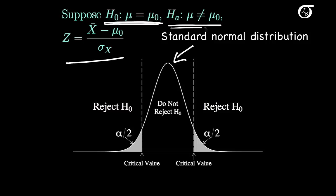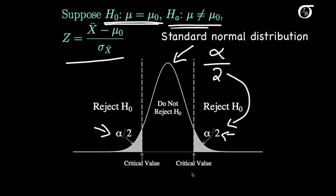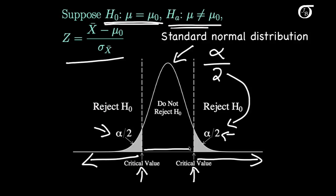Because our alternative hypothesis is two-sided, we're going to take that alpha value and divide it by 2, splitting it evenly into the two tails. We then find the value from the standard normal distribution that gives an area of alpha over 2 to the right, and we call that the critical value. It's the critical value because it separates the rejection region from the region where we do not reject the null hypothesis. We reject the null hypothesis if we get a value in either tail; if we get a value in the middle, we do not reject.